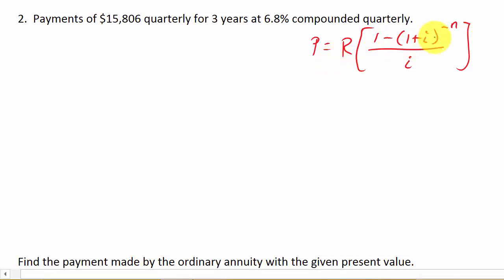Alright, so let's get R, I, and N. So R is equal to 15,806. And then we need the interest rate, little r, that's 6.8%, so 0.068. M, well it's quarterly, so M is 4.